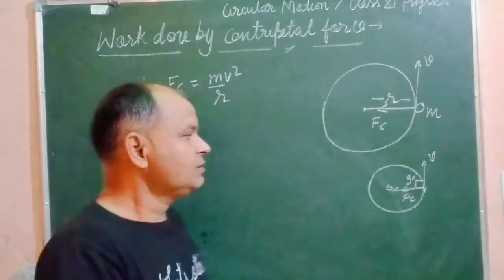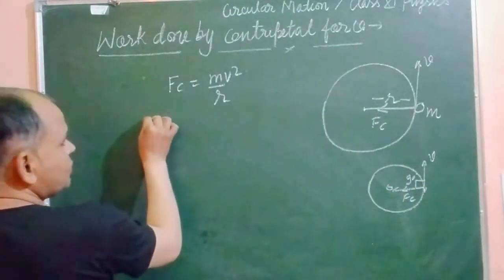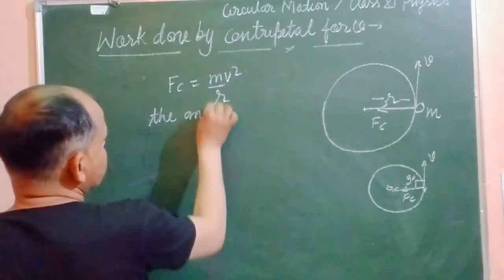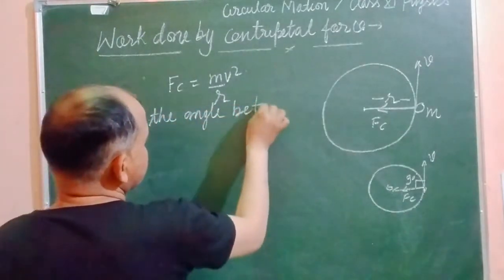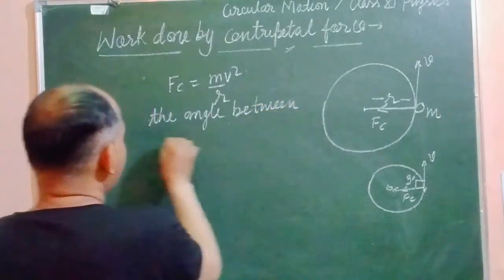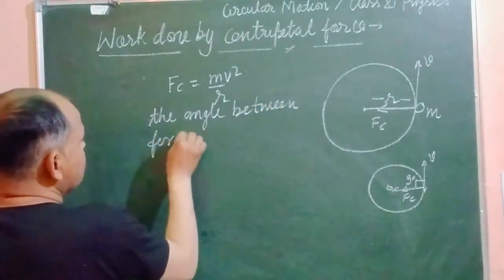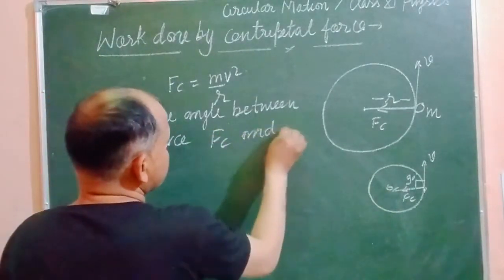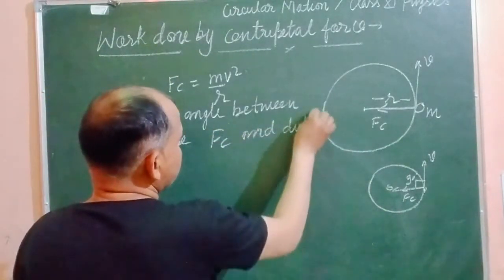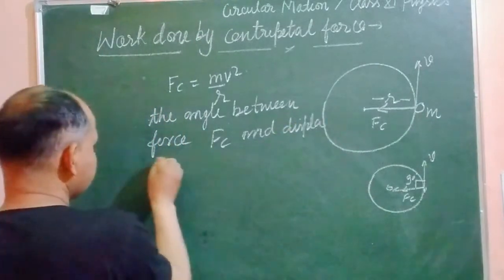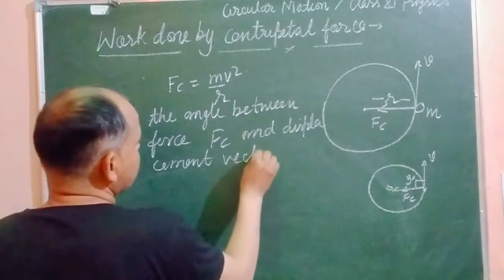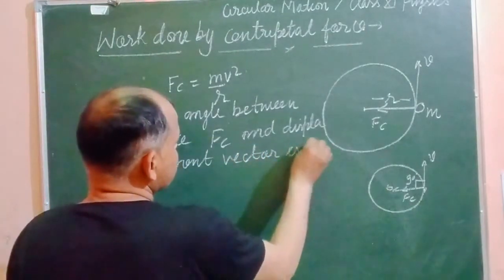So the angle between force, which is known as centripetal force, and displacement vector is 90 degrees.